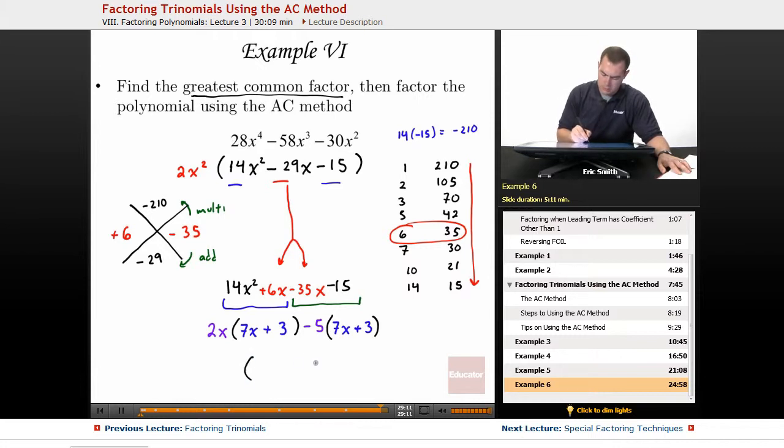Now I can grab my two binomials and almost be done. So they have a 7x plus 3 in common, and then there would be a 2x minus 5 left over. Now be careful, this one isn't done. Remember that initial factor we took out at the very beginning? It's still out front of this entire process. So feel free to write it down now in front of all of this. That way you do not forget it. Now we have the final factored form of our polynomial.